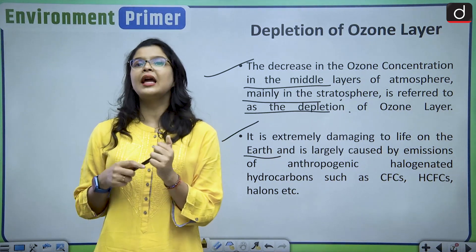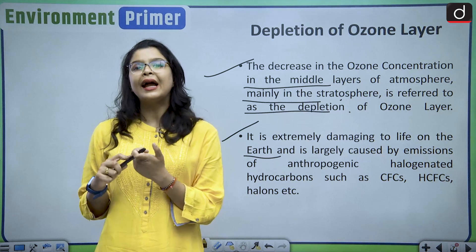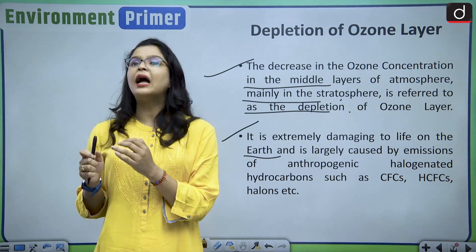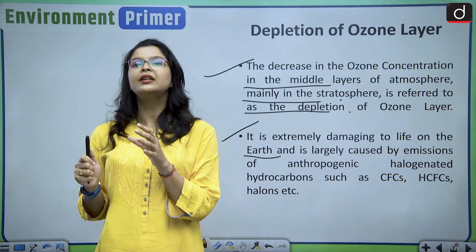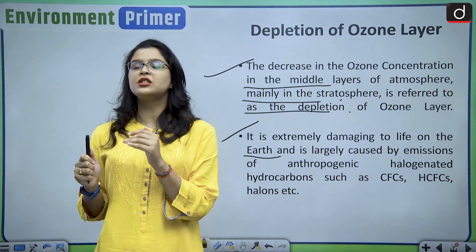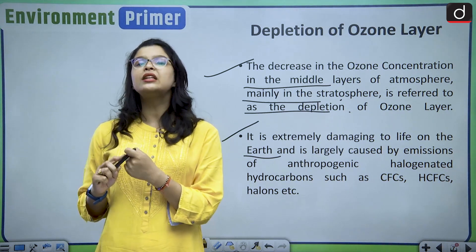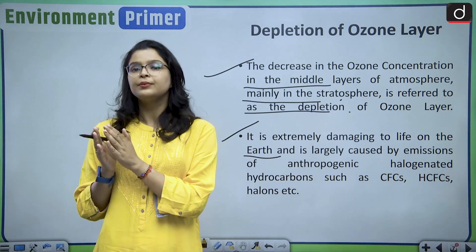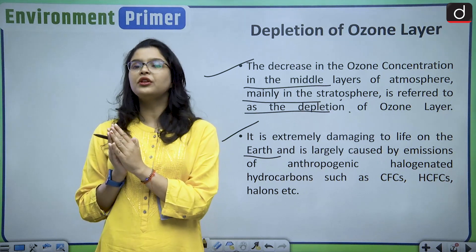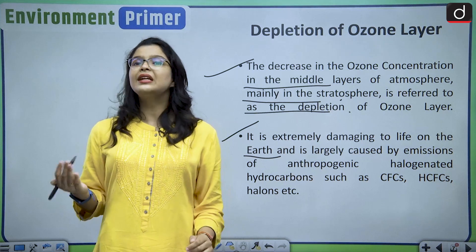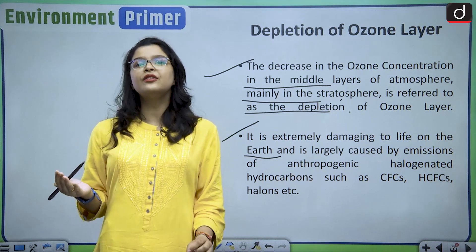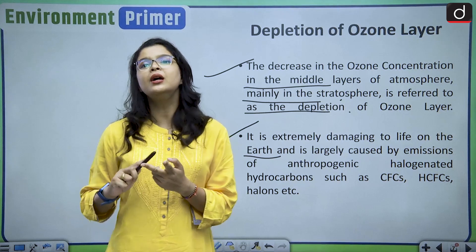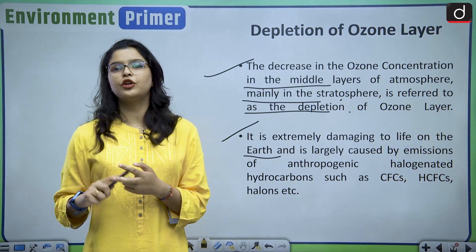In human life, depletion of the ozone layer can cause skin cancer and cataracts. As for plant life, plants will not be able to survive in the excess ultraviolet light. It is also very damaging to the phytoplankton, which are responsible for photosynthesis. So ozone layer depletion has a very harmful impact on both human life and plant life on earth.